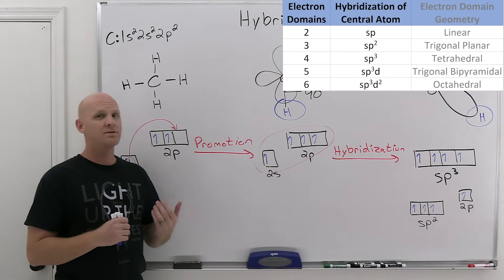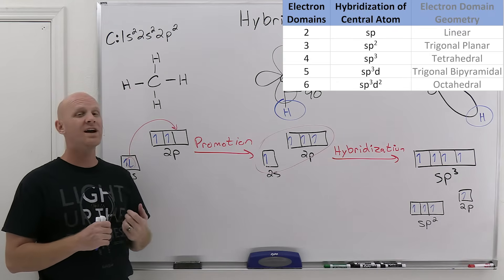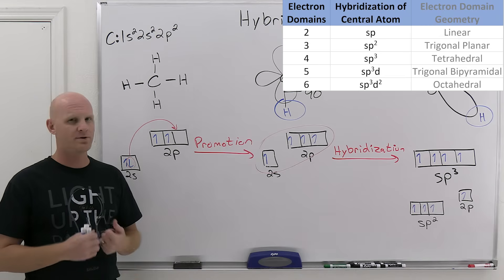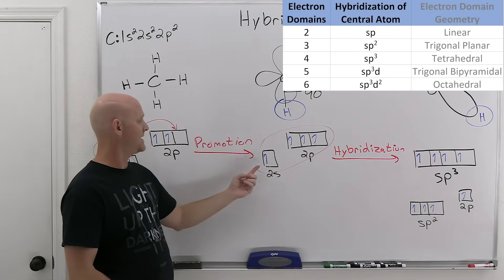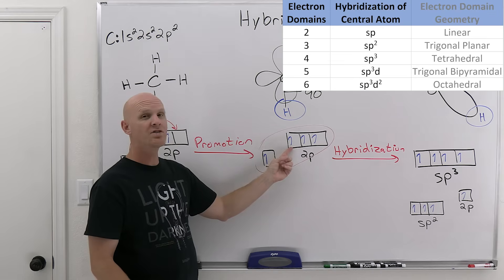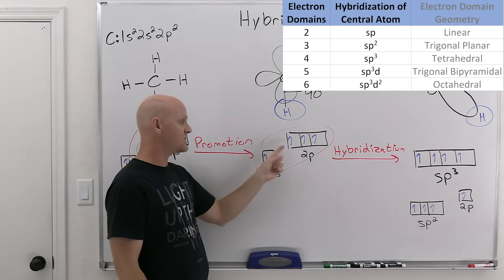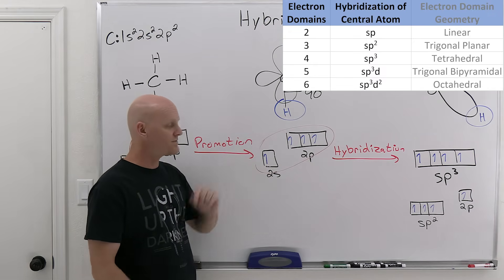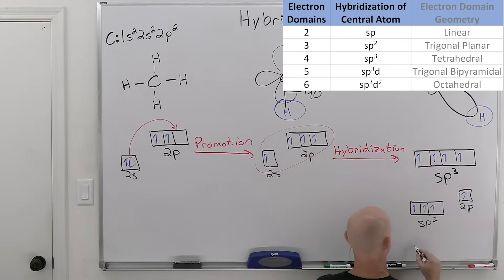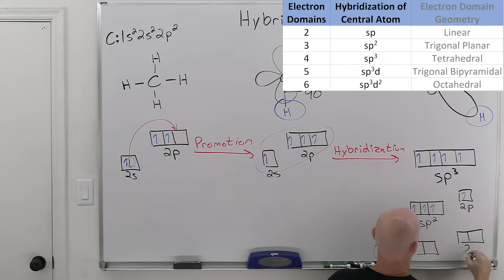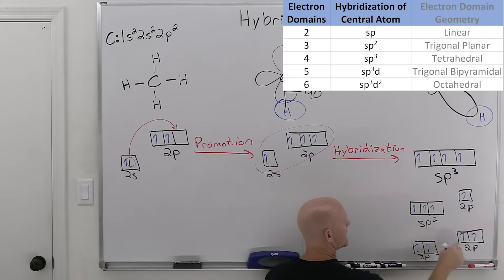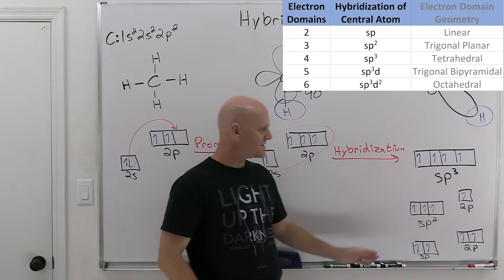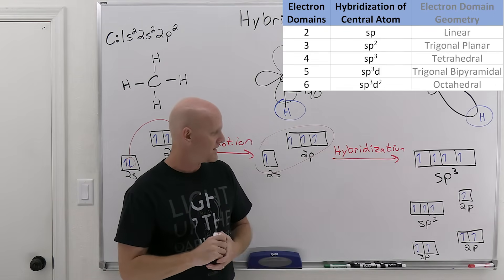Carbon has one more option: if carbon only has two electron domains, it only needs two hybrid orbitals, so it only needs to mix two original atomic orbitals. You always start with the s — the lowest energy one — and it only needs to mix in one other p. So instead of mixing s with all three p's or with two p's, in this case it just mixes s with one p. We call those sp hybrids, and then there are two unhybridized p orbitals. We'll see where these fit in when we look at multiple bonds, sigma and pi bonds in the next lesson.